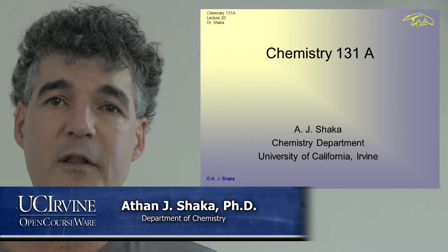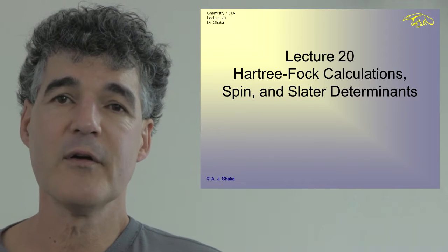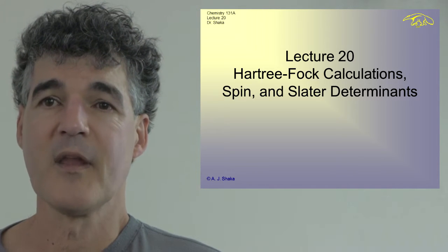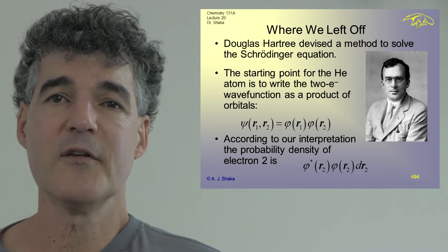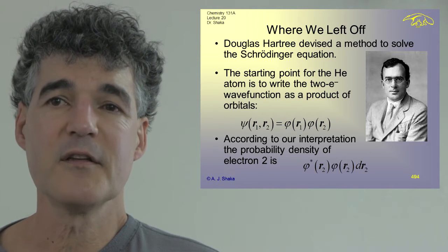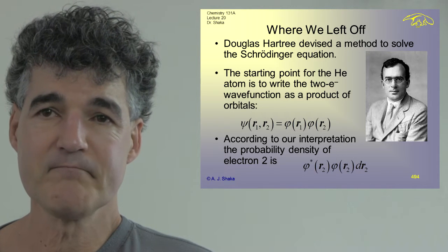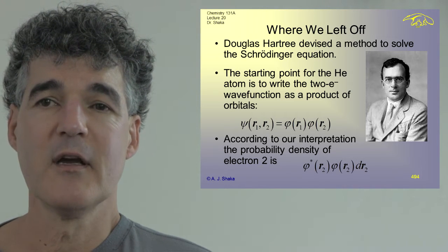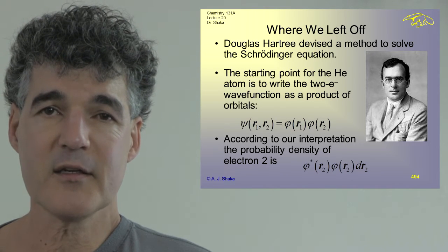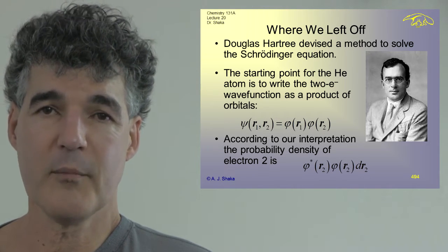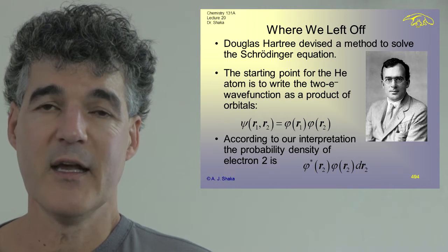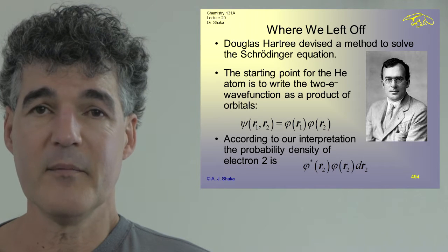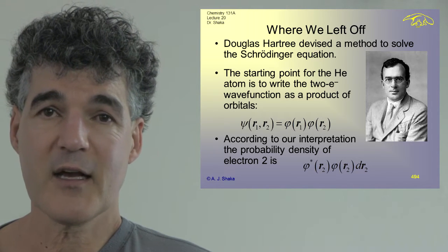We're going to continue in Chemistry 131A and today we're going to talk about Hartree-Fock calculations, spin and Slater determinants. We left off having introduced Douglas Hartree, who devised a method to solve the Schrödinger equation for an atom. The starting point for the helium atom is to write the wave function for the two-electron system as a product of two one-electron orbitals. That's the essential simplification, and as we've seen earlier, this is a somewhat flawed approach.